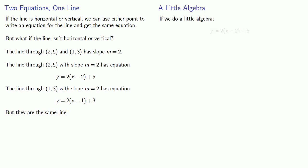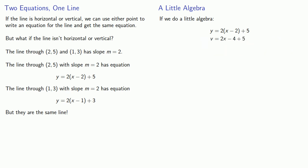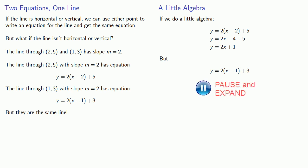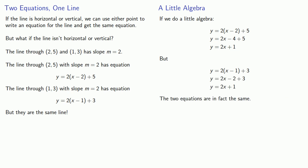The first equation, y equals 2 times (x minus 2) plus 5, we can expand and simplify. And we can do the same thing with the other equation, y equals 2 times (x minus 1) plus 3. Expanding and simplifying both, we see that after this expansion and simplification, we actually get the same equation.